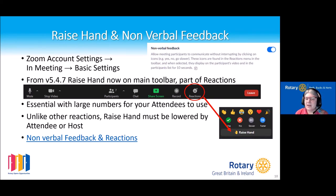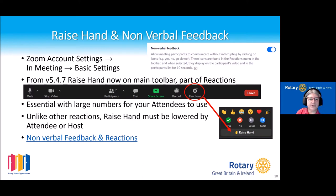Nonverbal feedback and raised hands are functions you have to have turned on. In Zoom account settings under basic settings, you turn that on. From version 5.4.7, the raised hand and other reactions, which previously were at the bottom of the participants panel, are now actually on the main toolbar.